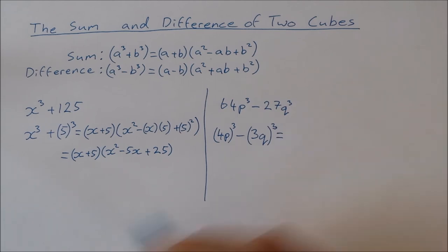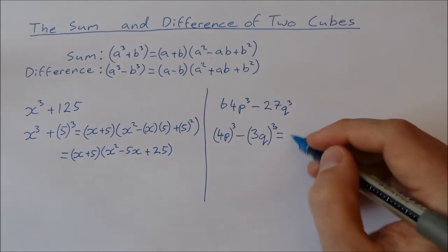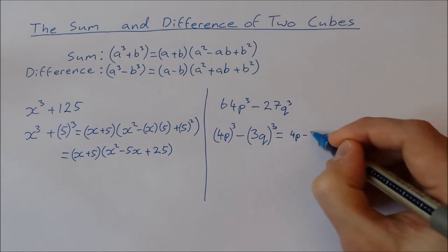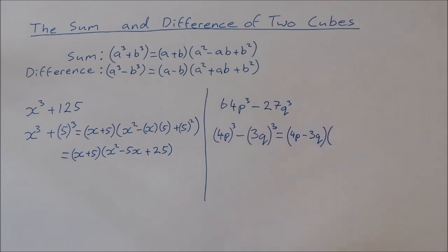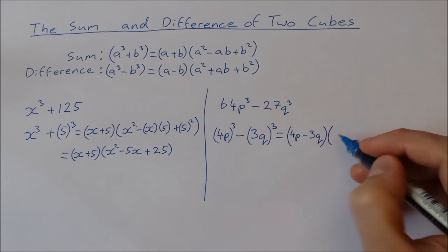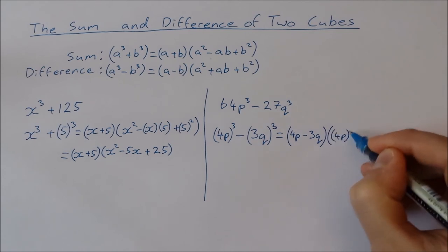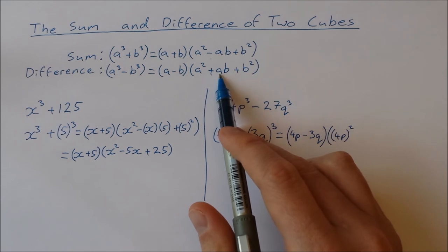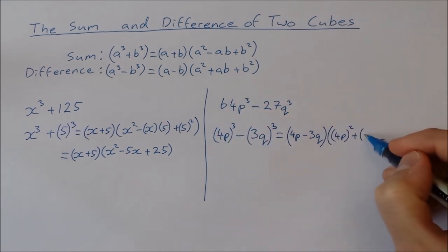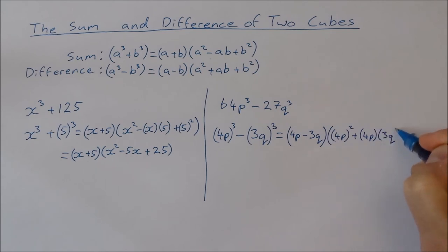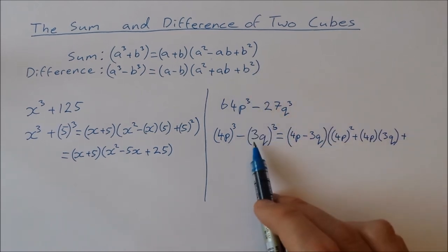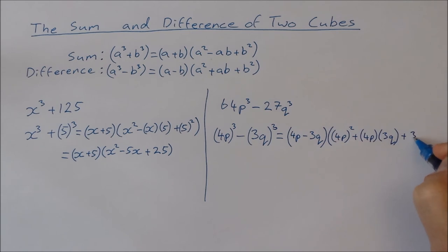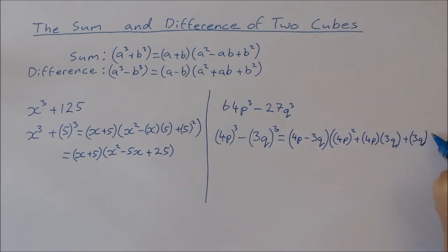So that is going to be equal to the first minus the second. So that's 4p minus 3q. Times the first squared. So plus 4p times 3q. And plus the second squared. So plus 3q squared.